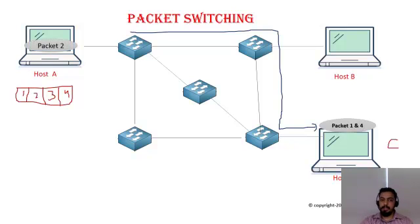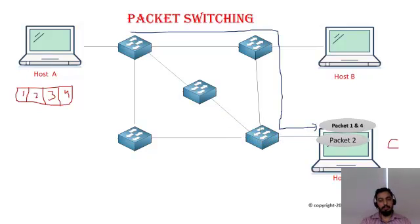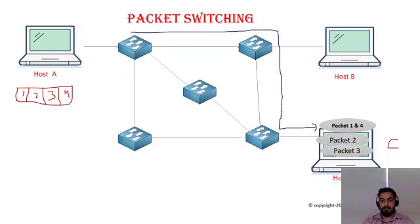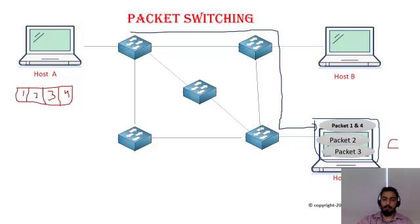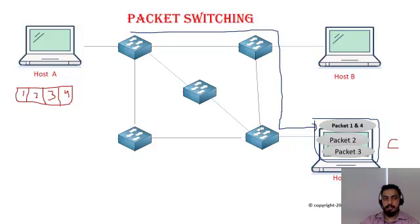Packets two and three are still to be sent. Packet two takes a different path to reach the destination, and packet three also takes yet another different path. Once all chunks arrive at the destination, the destination reassembles the data, processes it to present to the user, and sends the response back to the source host A.